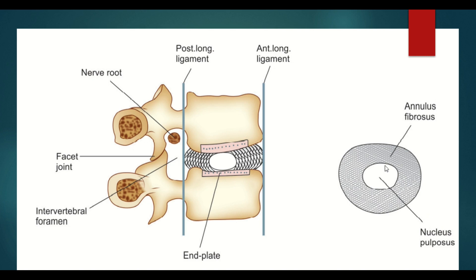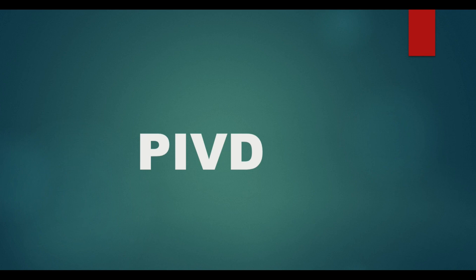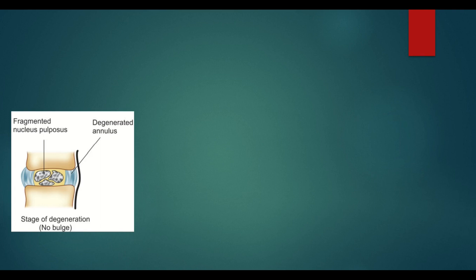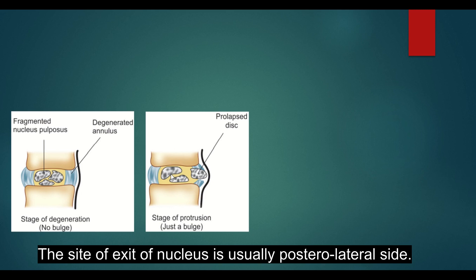Prolapsed intervertebral disc is not a single phenomenon but a sequence of changes that occur in the disc leading to its prolapse. First, there are degenerative changes — softening and fragmentation of the nucleus pulposus. At the same time, degenerative changes occur in the annulus fibrosus. If there is any defect, degenerative change, or injury to the annulus fibrosus, then due to the constant pressure on the intervertebral disc, the disc prolapses through the annulus fibrosus.